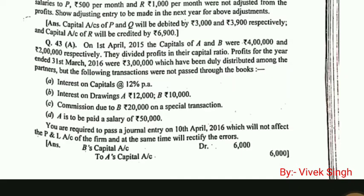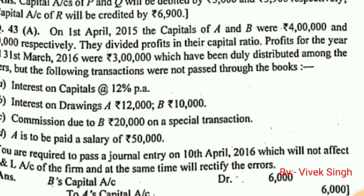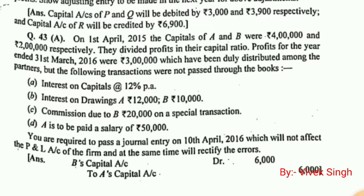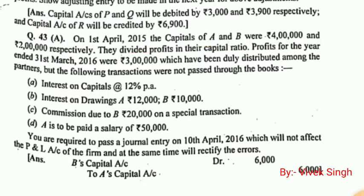First, let's read this question carefully to understand what we have to do. On 1st April 2015, the capital of A and B were rupees 4 lakh and 2 lakh respectively. They divided their profits in their capital ratio, meaning the profit is divided as per their capital — 4 lakh and 2 lakh.